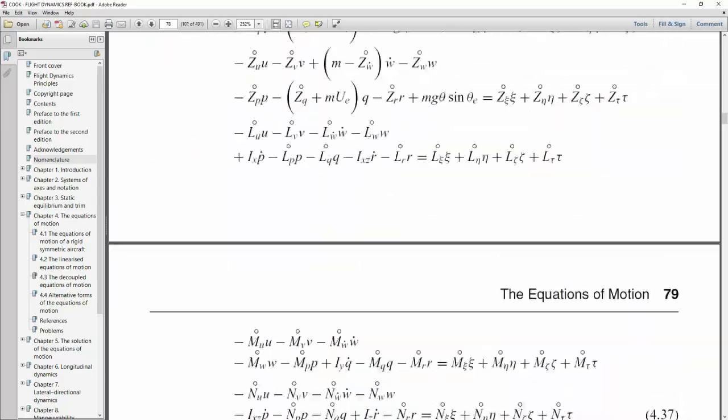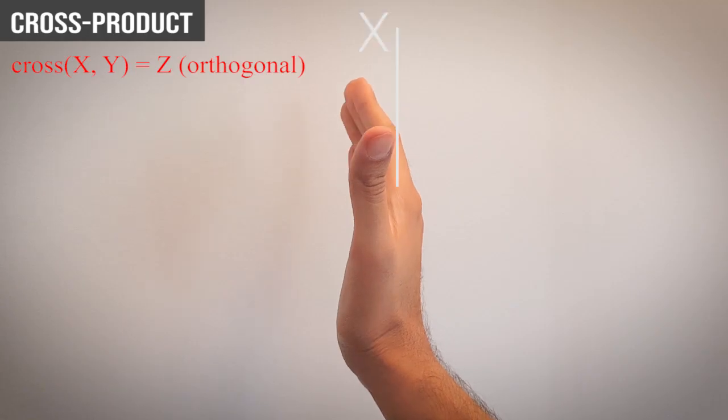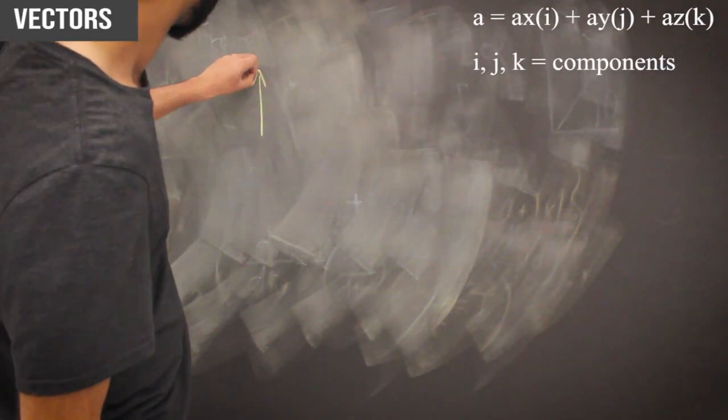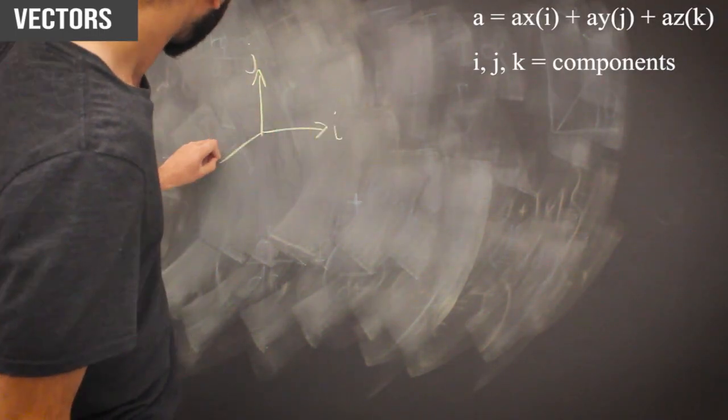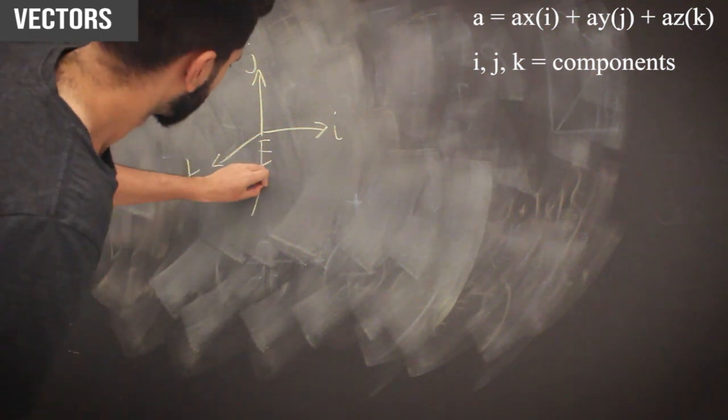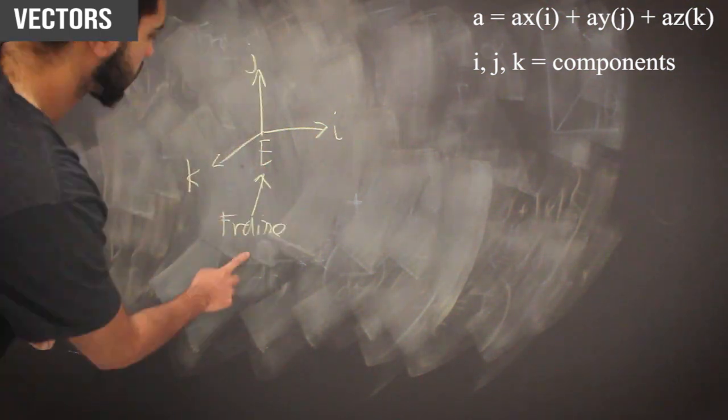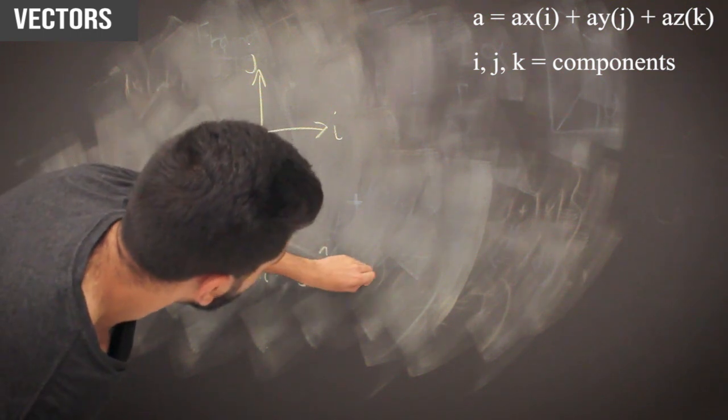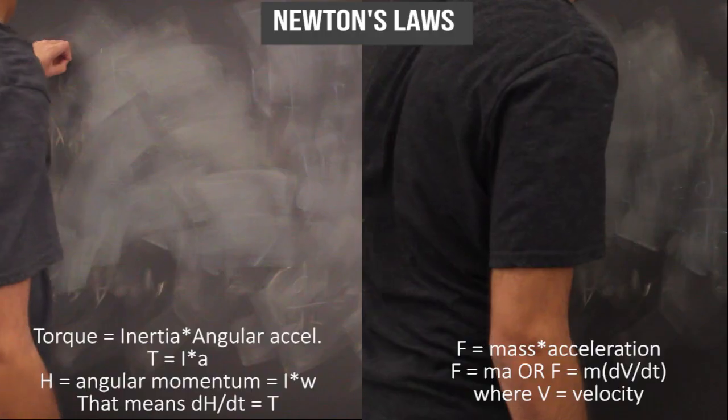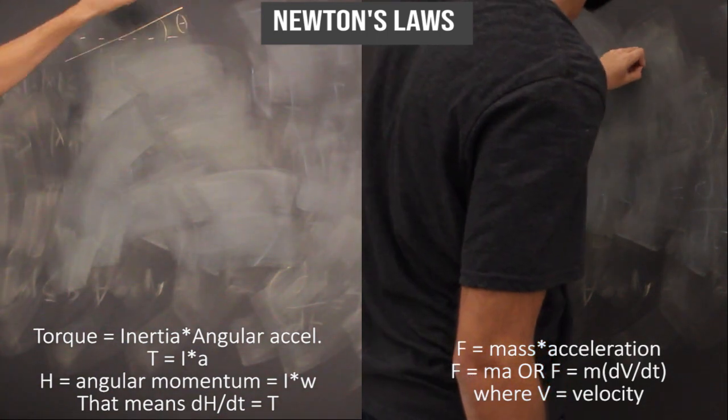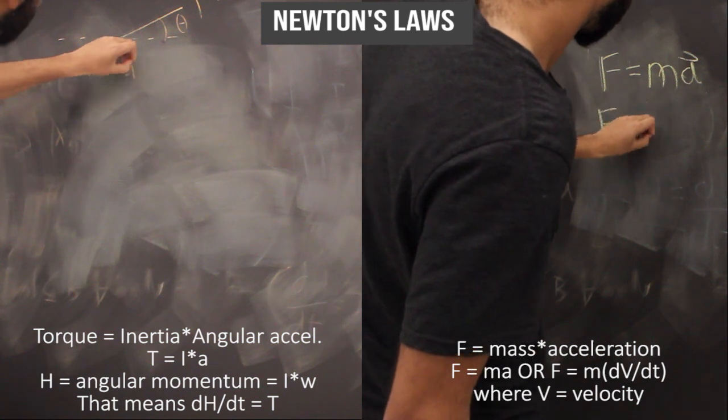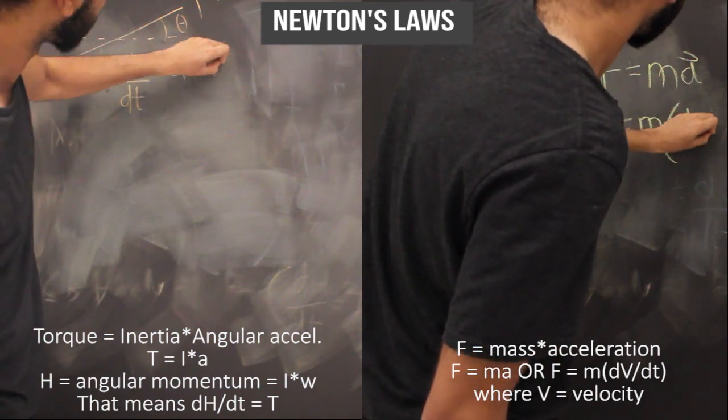Let's first look at dynamics. Cross product: X cross Y gives you Z, which is outside the plane. Next, you have vectors that can be represented by X, Y, and Z components, so it'll be a times I plus Y J plus Z K. I, J, K are the unit vectors. Newton's laws, as you all know, F equals MA where mass is the object mass and acceleration is DV over DT.